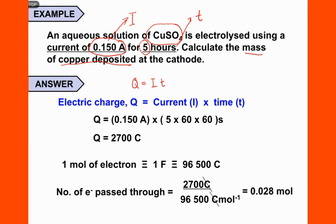From the given information, I is 0.150 amperes. The time of five hours must be converted to seconds, which is five times sixty minutes times sixty seconds. Calculating, we get Q equal to 2,700 Coulombs.